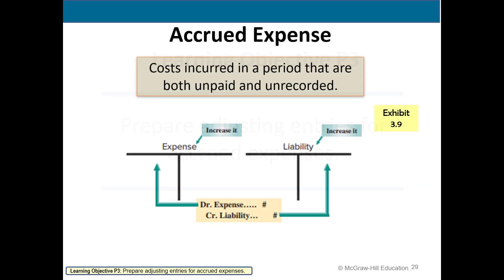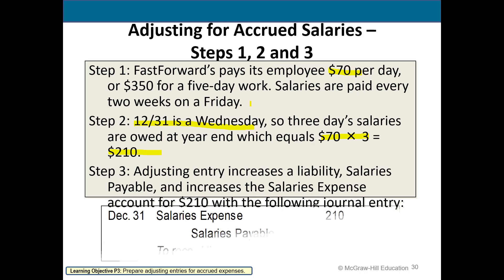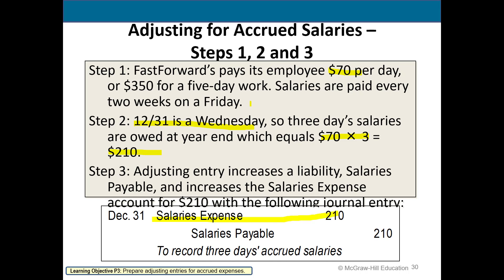Accrued expenses are costs incurred that are unpaid and unrecorded. For example, accrued salaries: one employee paid $70 a day, paid every two weeks on a Friday. The end of the month falls on a Wednesday, so we record Monday, Tuesday, and Wednesday — three days times $70 per day equals $210 owed. We debit salaries expense and credit the liability salaries payable.